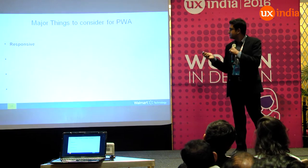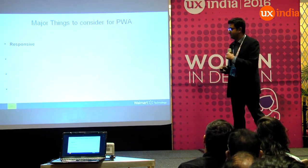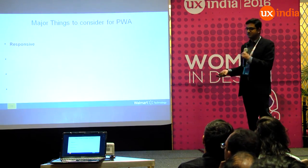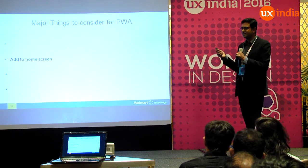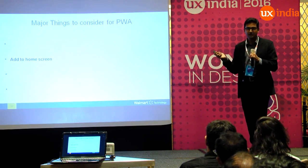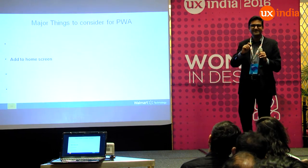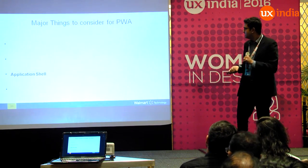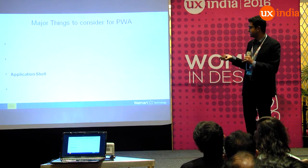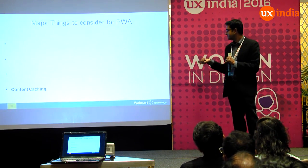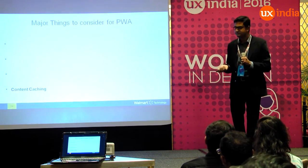The major things to consider when making a progressive web app: it has to be responsive, it should have an add-to-home-screen feature, it should be as app-like as possible, you should go with application shell architecture, and you should cache your content to make it as much of an app as possible.